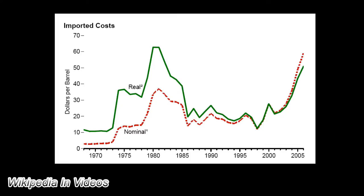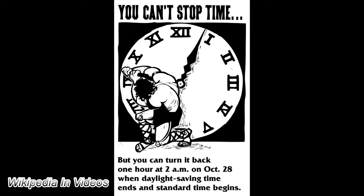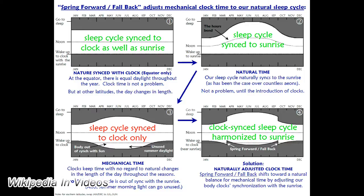DST is generally not observed near the equator, where sunrise times do not vary enough to justify it. Some countries observe it only in some regions — for example, parts of Australia observe it while other parts do not. Only a minority of the world's population uses DST; Asia and Africa generally do not observe it.